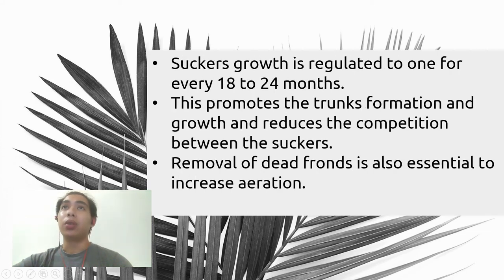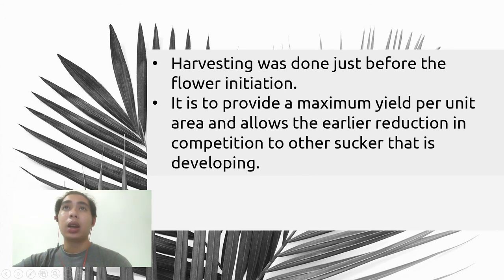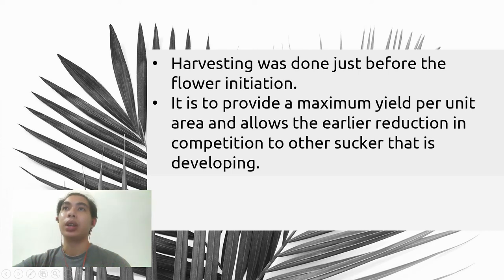Slash-weeding around the suckers is done twice a year during the early growth stage of the Sago palm to reduce competition for nutrients and space with weeds, and to enable easier access and recycling of nutrients from the slashed weeds. Sucker growth is regulated to one for every 18 to 24 months, which promotes transformation and growth and reduces competition between suckers. Removal of dead fronds is also essential to increase aeration. Lastly, harvesting is done just before flower initiation to provide maximum yield per unit area and allow early reduction in competition to other suckers still developing.